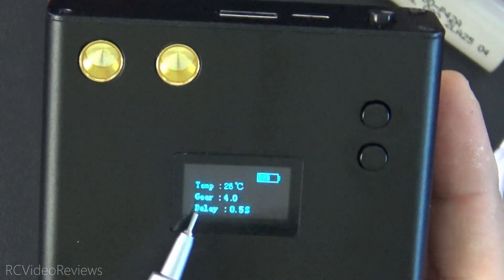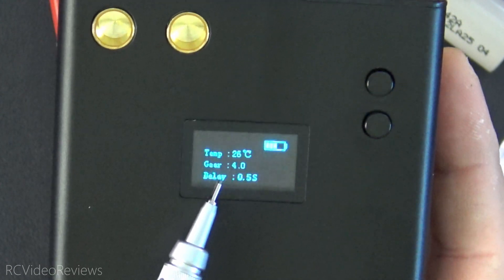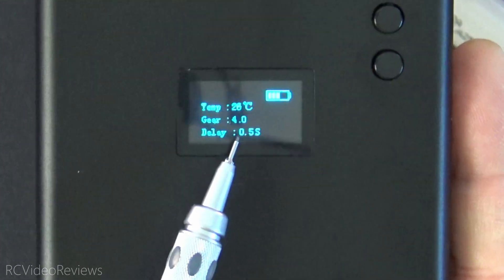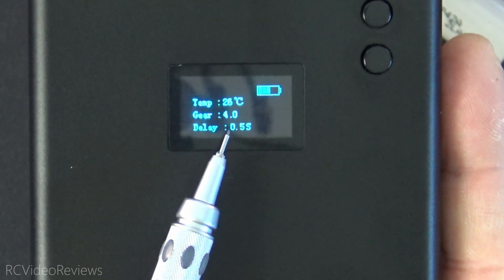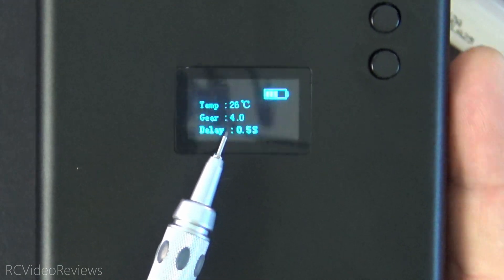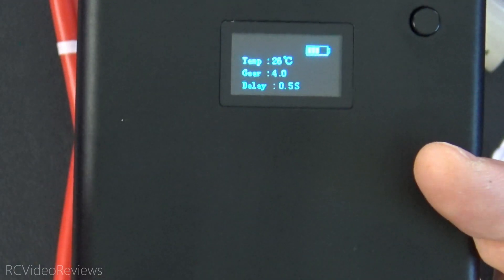So in this case it says gear four and then there's a delay. By default it says 0.5 seconds and that delay determines how long it takes after continuity is detected that the actual current is discharged into your spot weld.